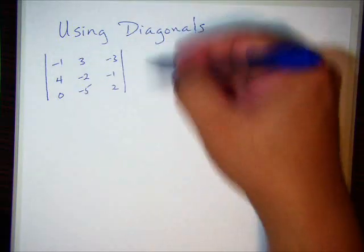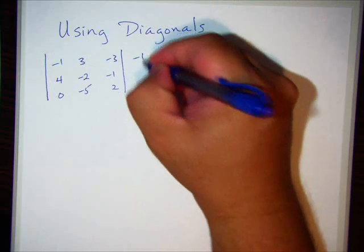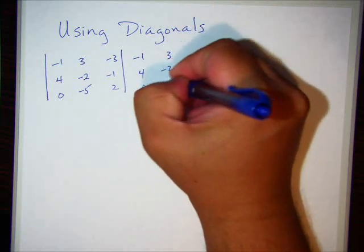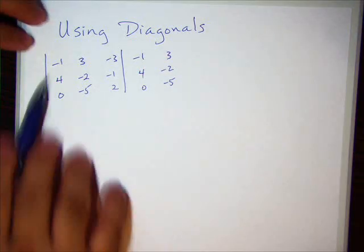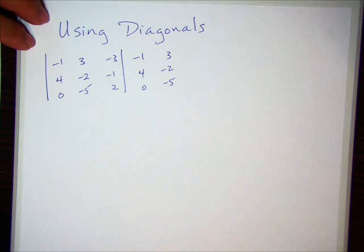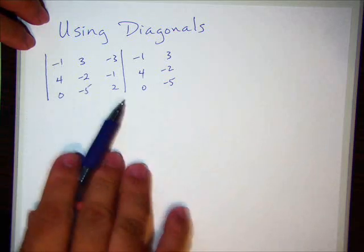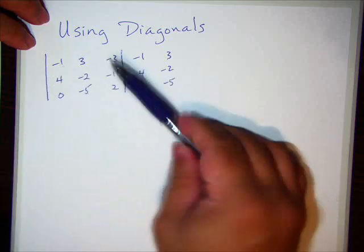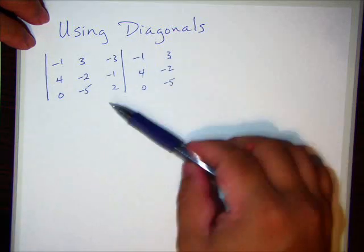We're going to take the first two columns and copy them. And then what we're going to do is multiply diagonally. Kind of like when we find a 2x2 matrix, we multiply all the numbers this way. And what we're going to do is add them. And then we're going to multiply those numbers the other way and subtract those.